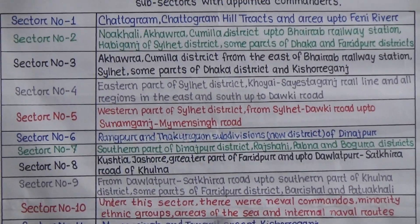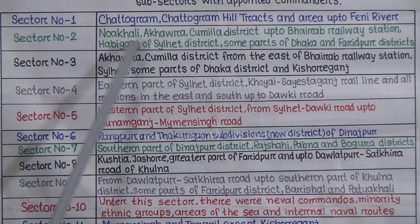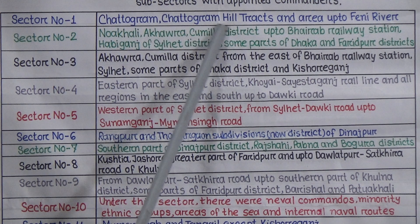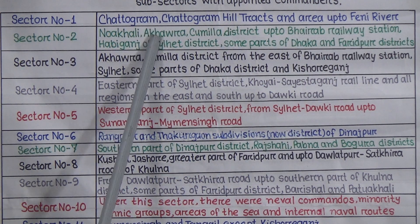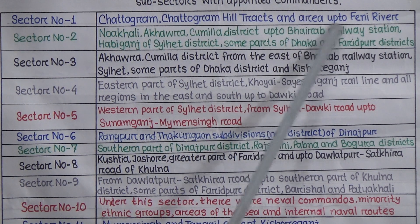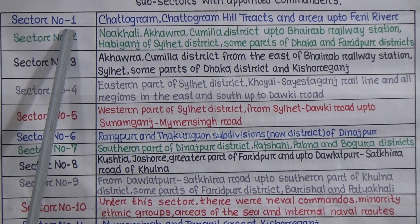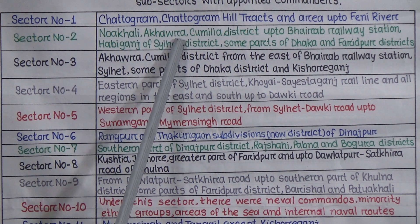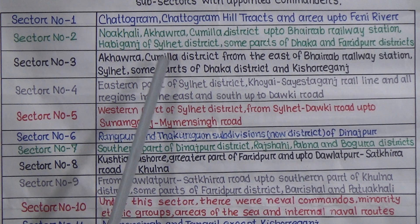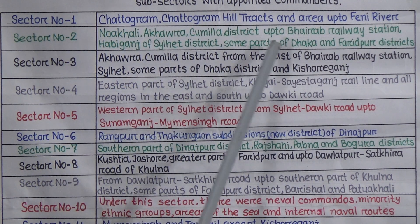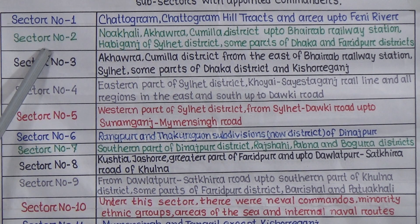Sector 1 included Chittagong, Chittagong Hill Tracts, and the area up to the Feni River. Sector 2 included Noakhali, Akhara, Comilla district up to Bhairab Bazaar station, Habiganj of Sylhet district, and some parts of Dhaka and Faridpur districts.